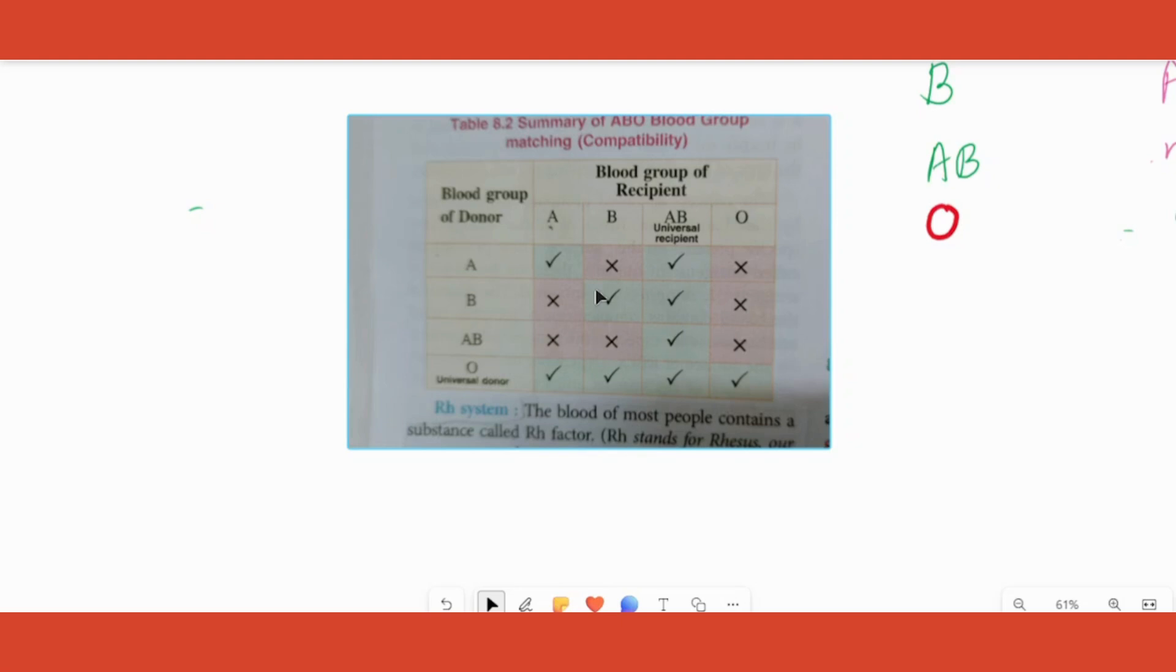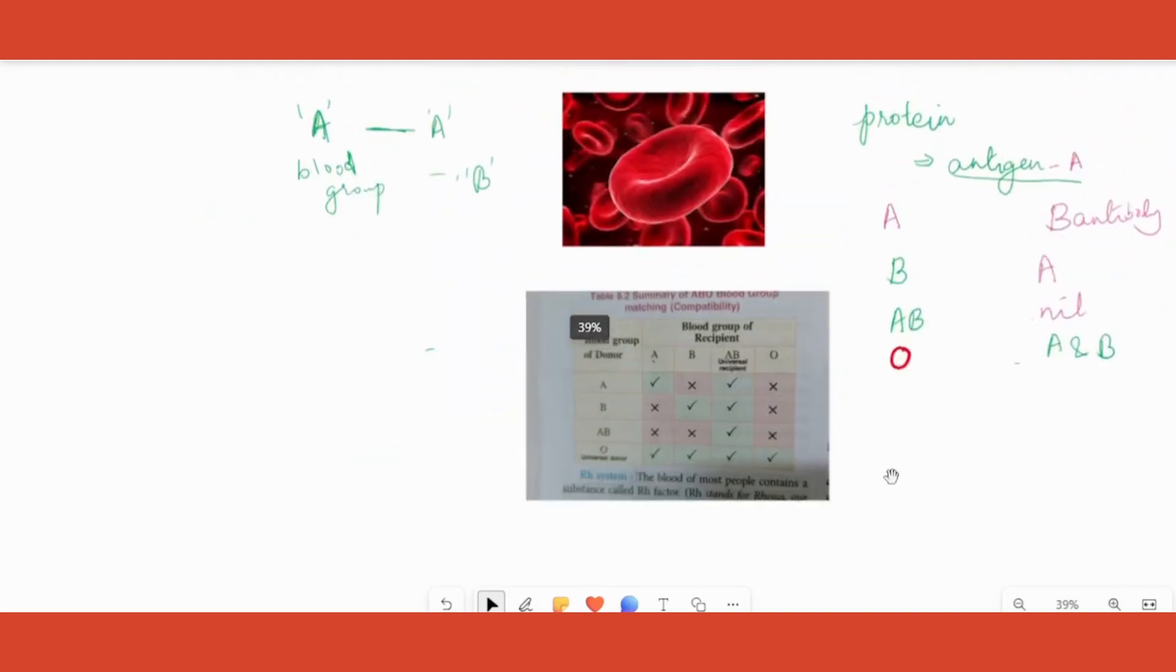The blood group which can donate to all the other blood groups is called the universal donor, and that is O blood group. The one that can receive blood from any type of blood group is called universal recipient, and that is AB.